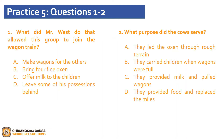Let's go ahead and review the provided questions about our passage. Question one: what did Mr. West do that allowed this group to join the wagon train? We have four options: A, make wagons for others; B, bring four fine oxen; C, offer milk to the children; or D, leave some of his possessions behind. The correct answer is D, leave some of his possessions behind. The answer is found in the seventh and eighth lines of paragraph one.